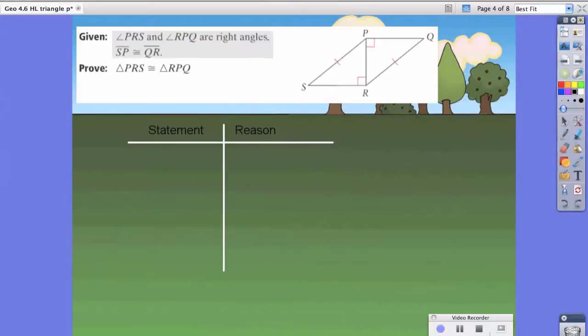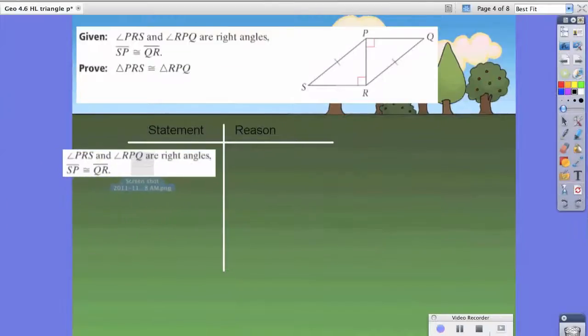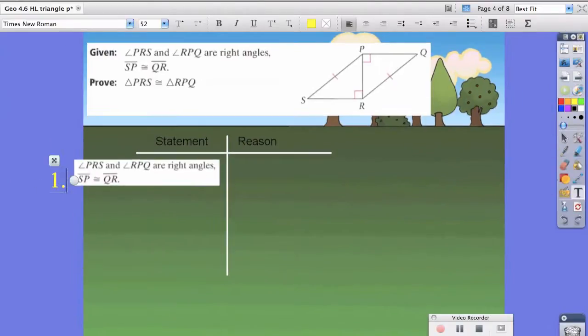Step one should be very easy. Step one is whatever they started us off with, and the reason we know that is because it's given. Keep in mind, the last part of the sentence tells us we've proved a side is congruent. We're going to track that just to make sure.